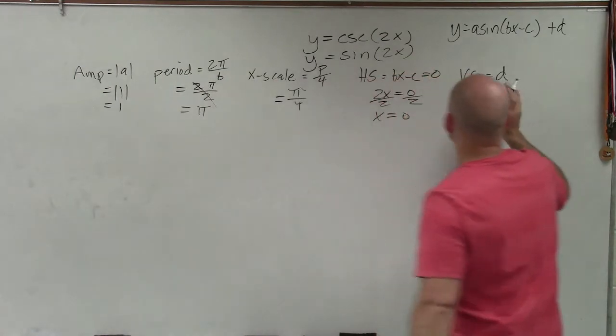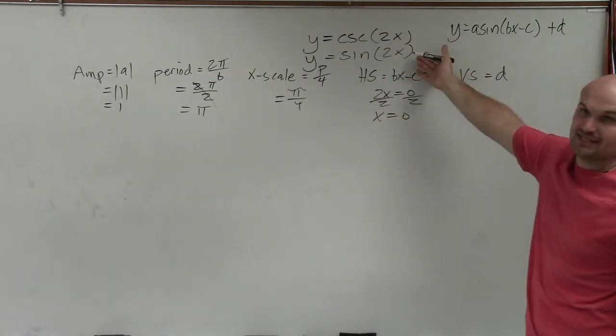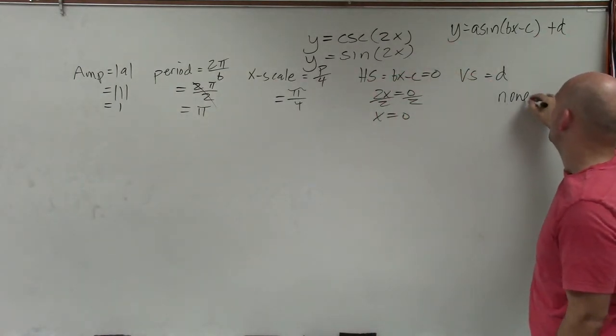And my vertical transformation is d, but d does not exist in the example, so we can just write none.